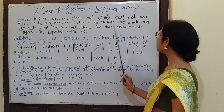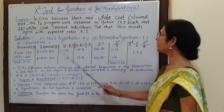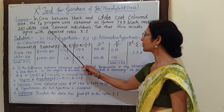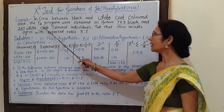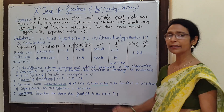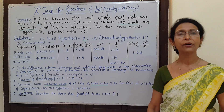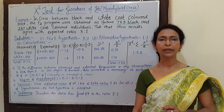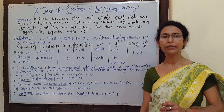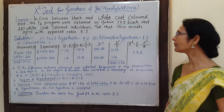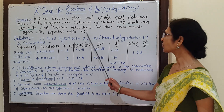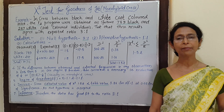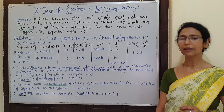there are 789 black and 287 white wood colored mice found in the F2 generation. For testing that this result is in agreement with the monohybrid ratio of 3 is to 1, we have to do the Chi-Square test.